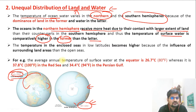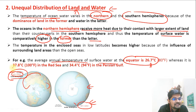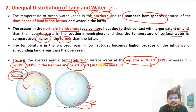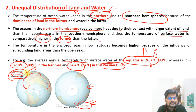For example, the average annual temperature of surface water at the equator is 26.7°C, whereas it is 37.8°C in the Red Sea and 34.4°C in the Persian Gulf. Moving from the equator towards the Red Sea or Persian Gulf, temperature increases. In the tropics, you have maximum warming.